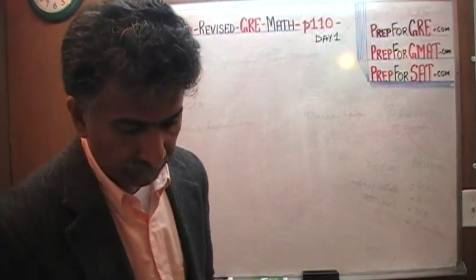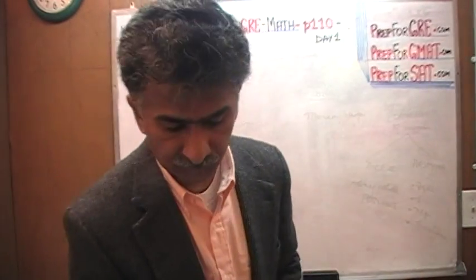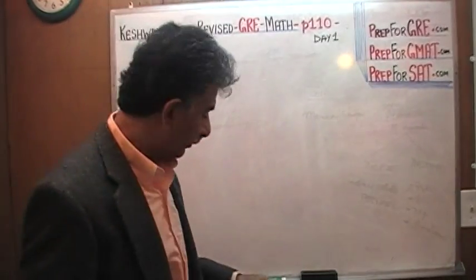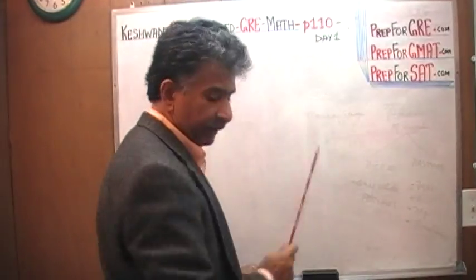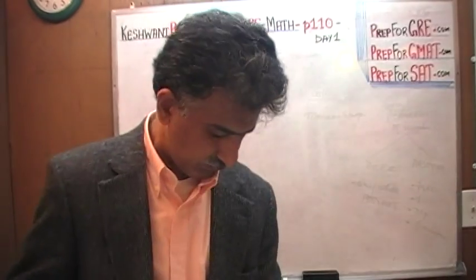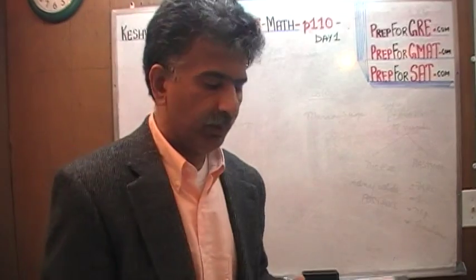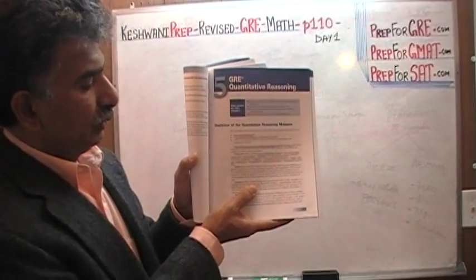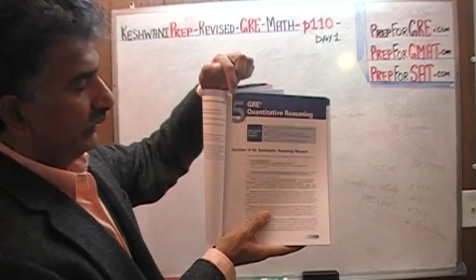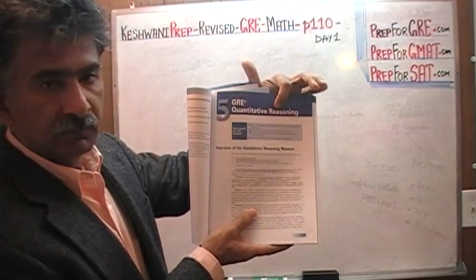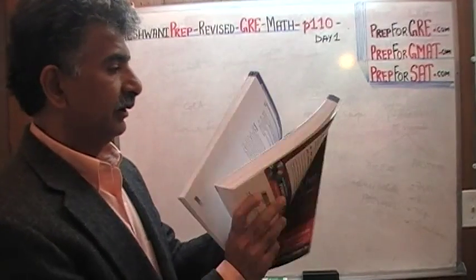My goal is to do every single math question in the book. Today is day number one and I'm on page 110. Turn to page 107, where you will see the beginning of the fifth section, GRE Quantitative Reasoning.